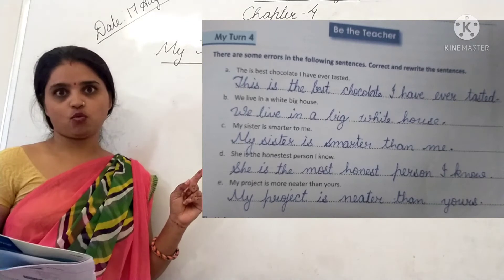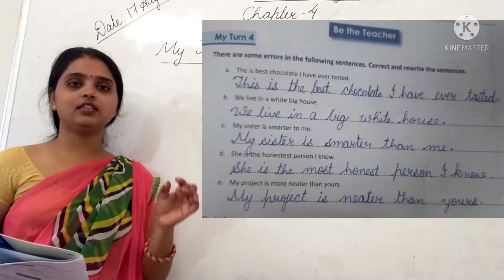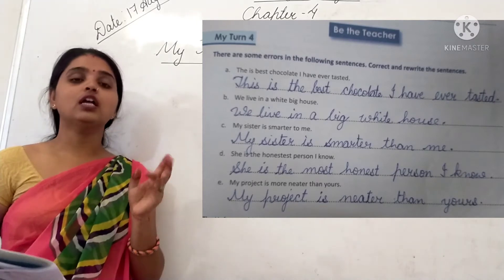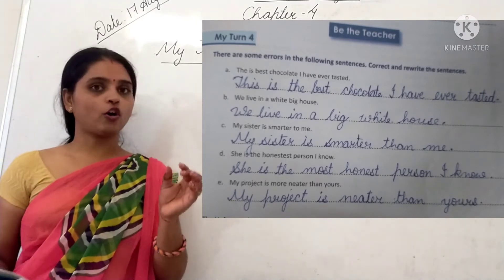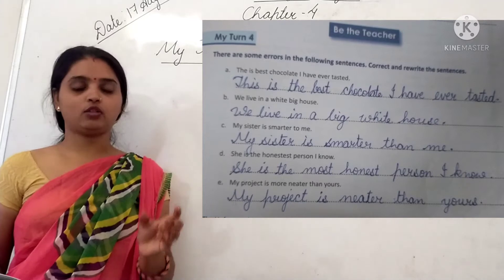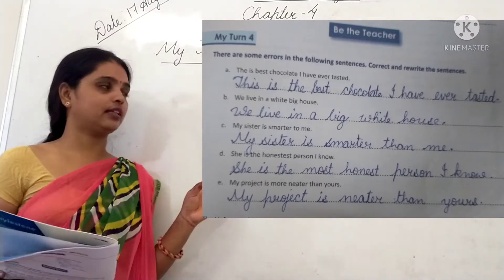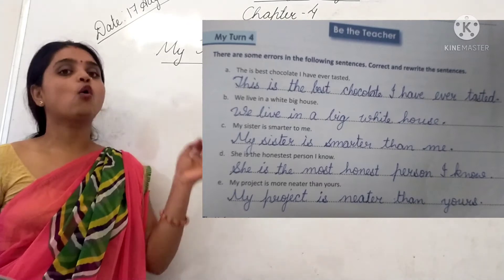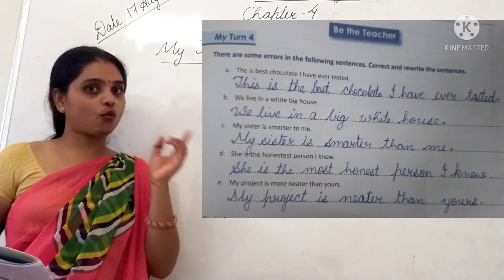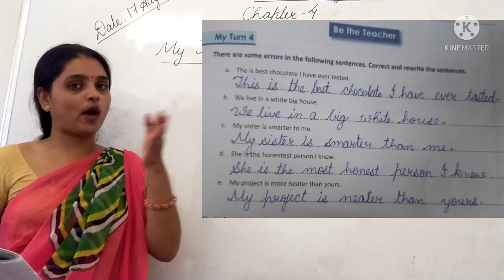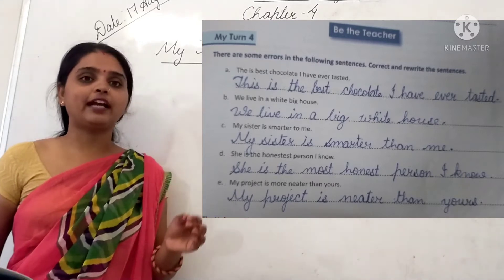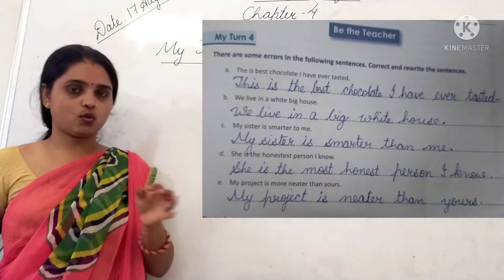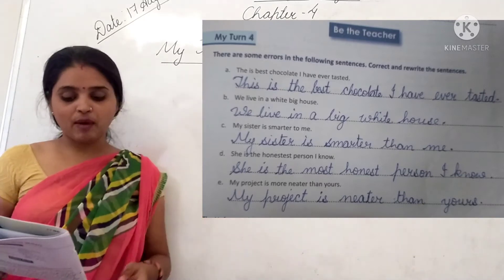Next, question B: 'We live in a white big house.' You can see there are two adjectives here. According to the rules the adjectives should be in the proper order. So the answer will be: 'We live in a big white house.' The mistake was that 'white' was written first and then 'big,' so in the answer we write 'big white house.'